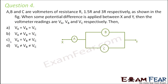A, B and C are voltmeters of resistance R, 1.5R and 3R. So here A is a voltmeter of resistance R, B has resistance 1.5R and C has resistance 3R. Now when some potential difference is applied between X and Y, the voltmeter readings are VA, VB and VC respectively. We have to find the relationship between the potential differences of A, B and C.